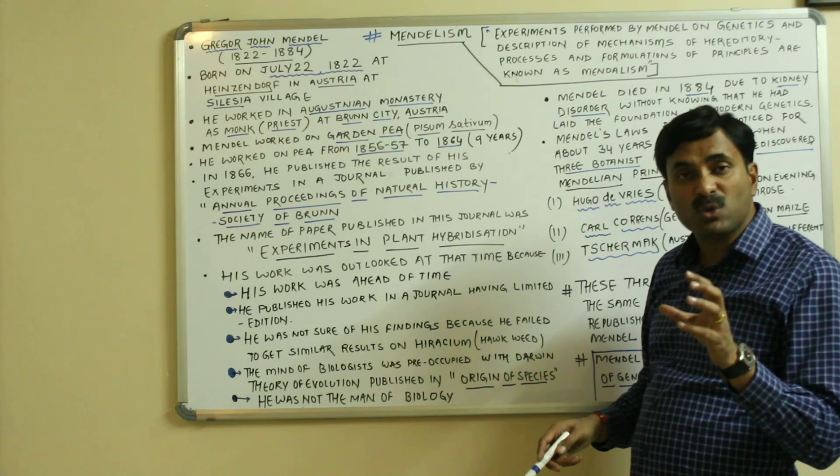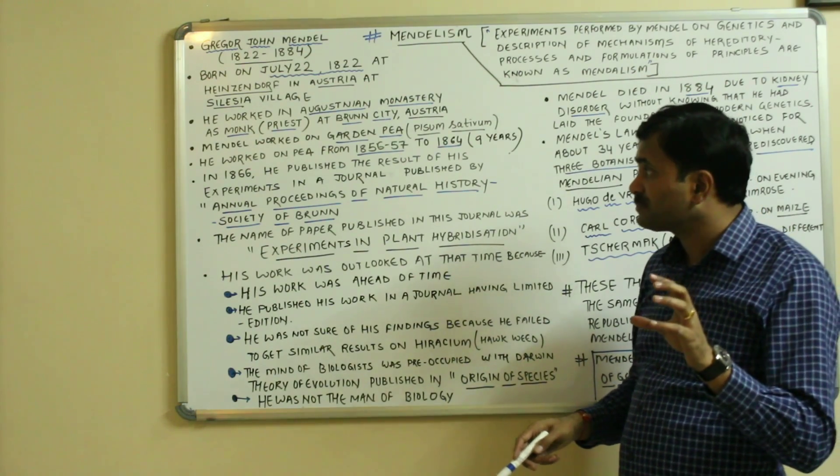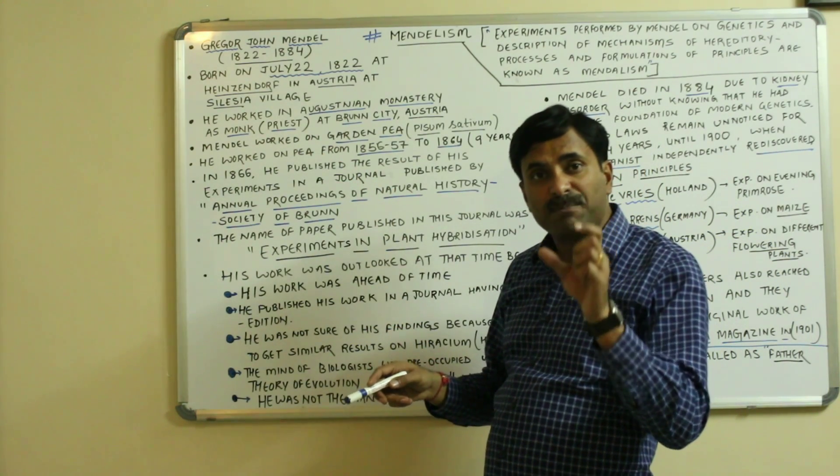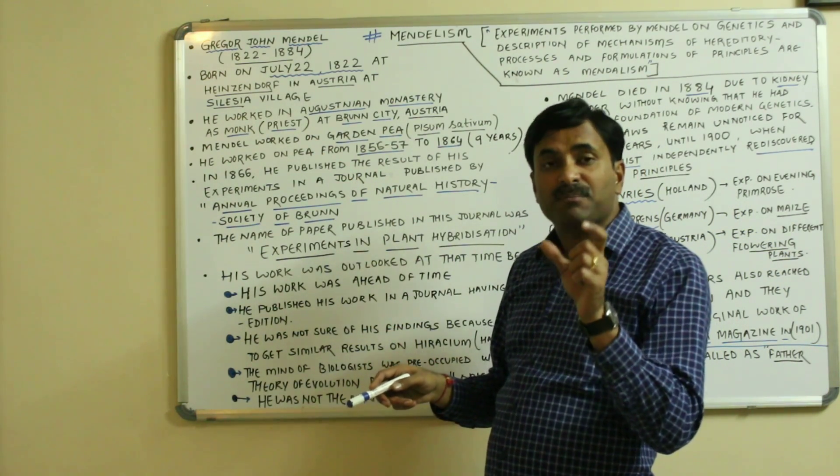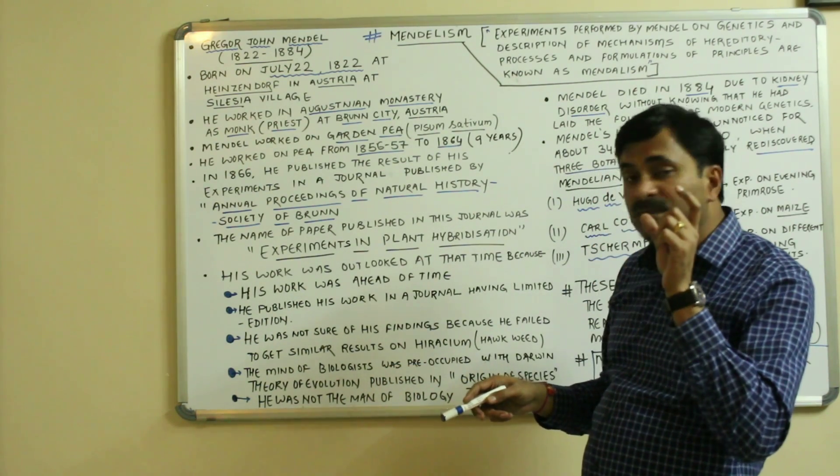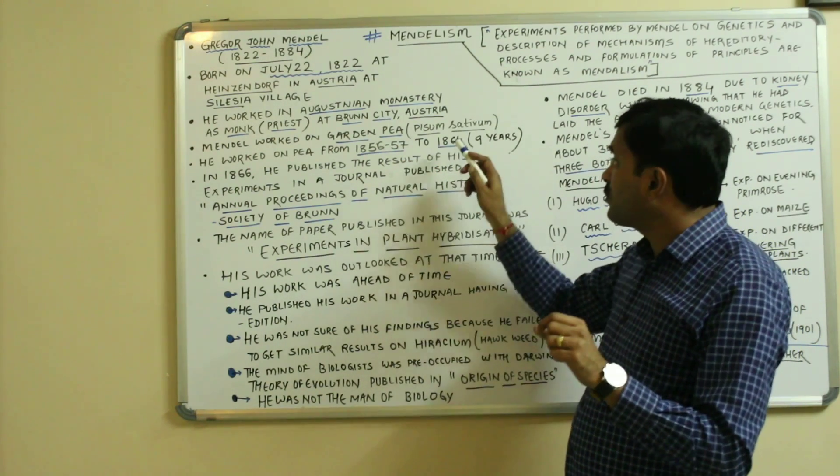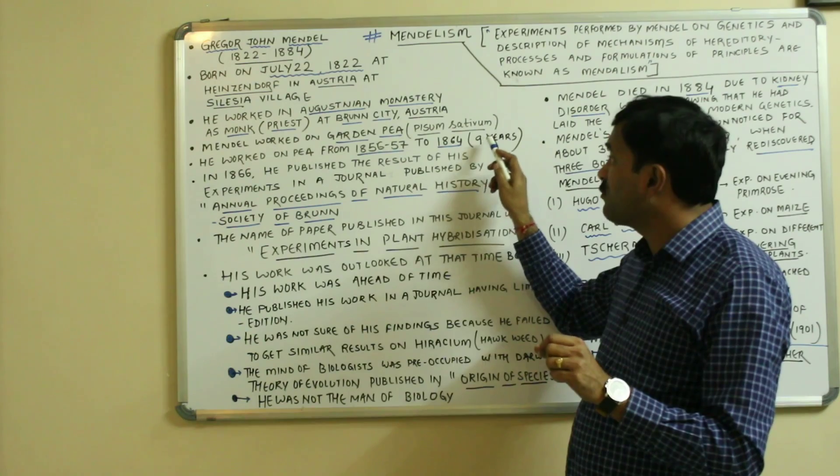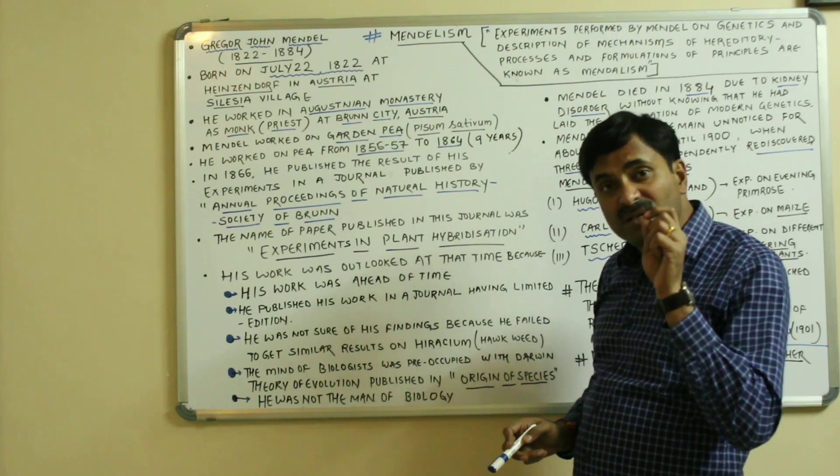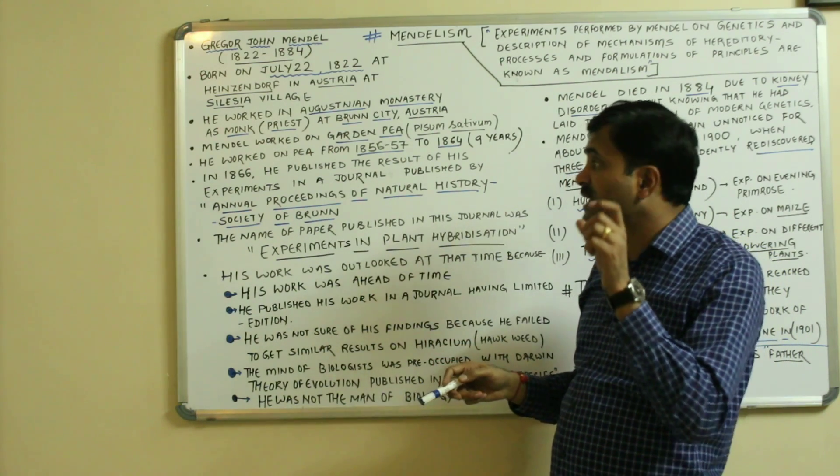He worked intensely on the pea plant for nine years. He started work on the pea plant in the year 1856-1857 up to 1864. Then in the year 1866, he published the results of his experiment.